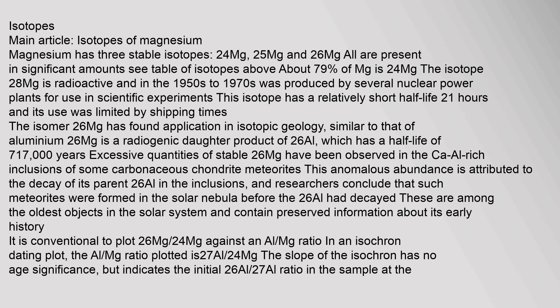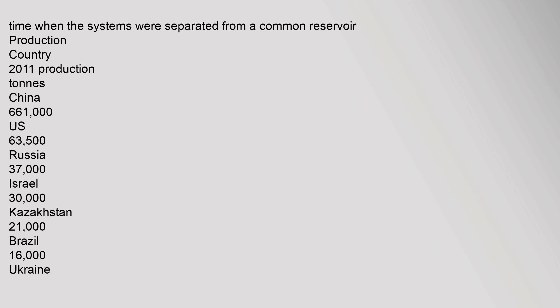Researchers conclude that such meteorites were formed in the solar nebula before the ²⁶Al had decayed. These are among the oldest objects in the solar system and contain preserved information about its early history. It is conventional to plot ²⁶Mg/²⁴Mg against an Al/Mg ratio. In an isochron dating plot, the Al/Mg ratio is plotted as ²⁷Al/²⁴Mg. The slope of the isochron has no age significance but indicates the initial ²⁶Al/²⁷Al ratio in the sample at the time when the systems were separated from a common reservoir.